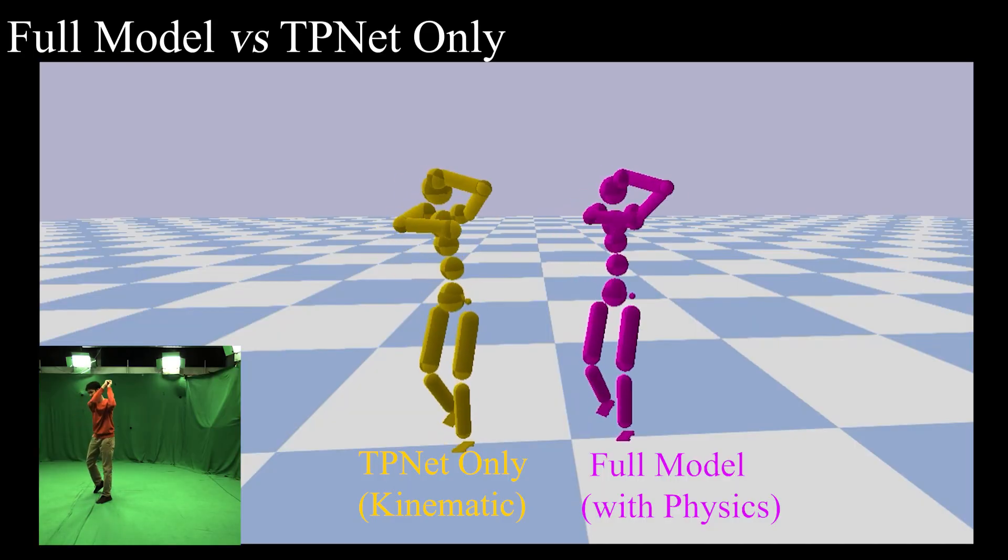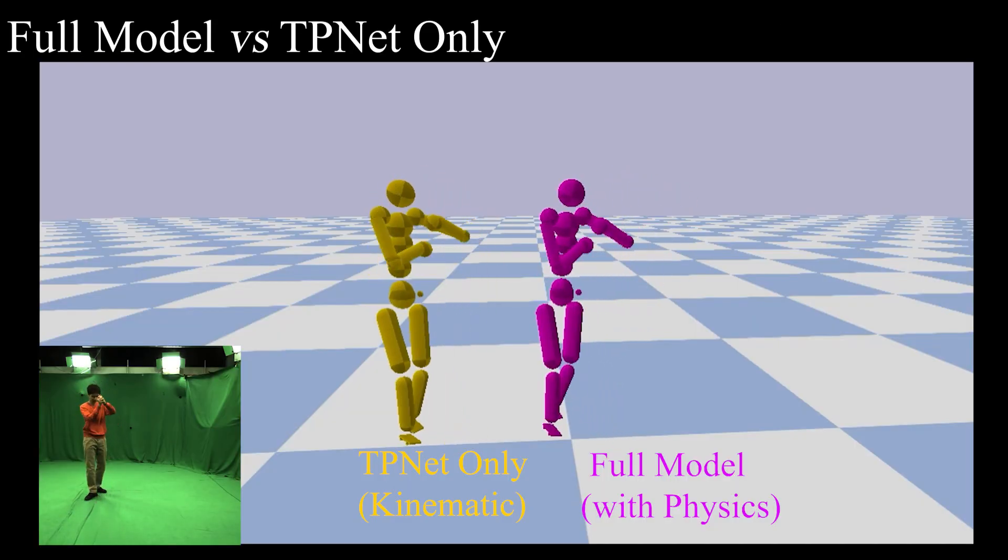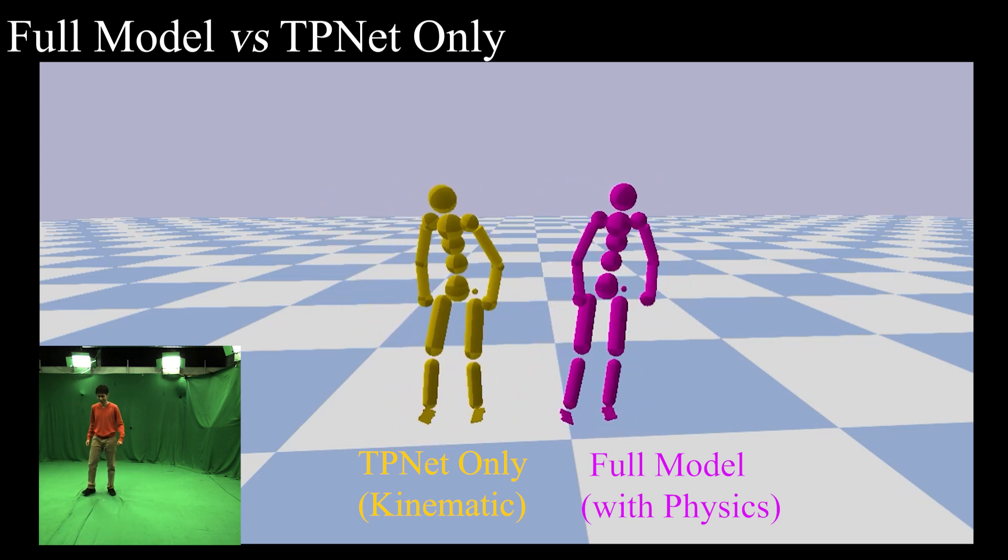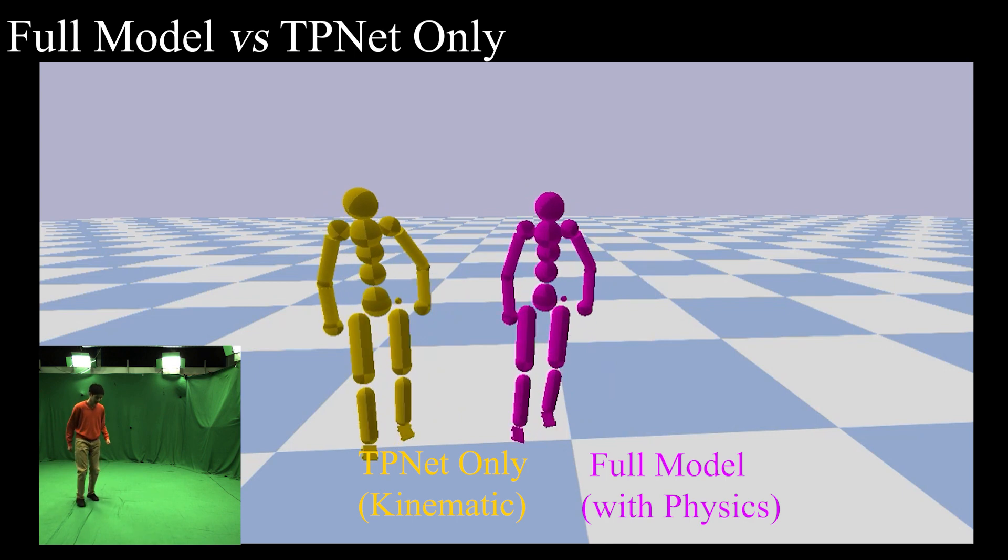We next visualize the results of our algorithm with and without the physics model. Artifacts such as jitter and sudden root-orientation changes can be observed if the physics model is deactivated.